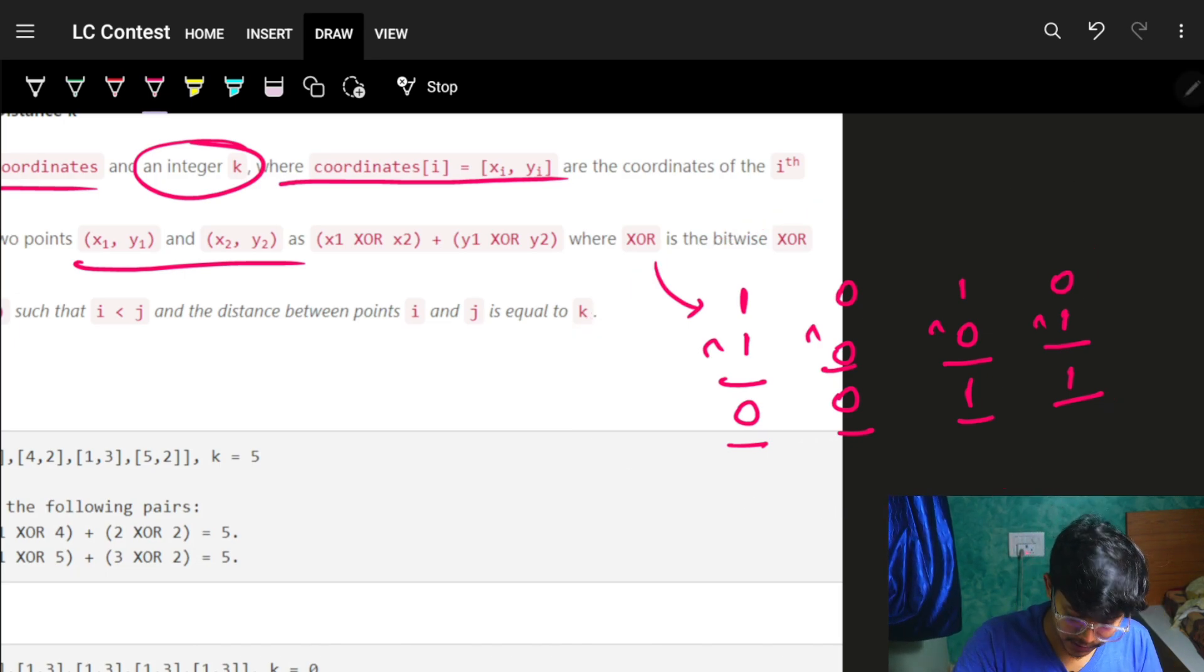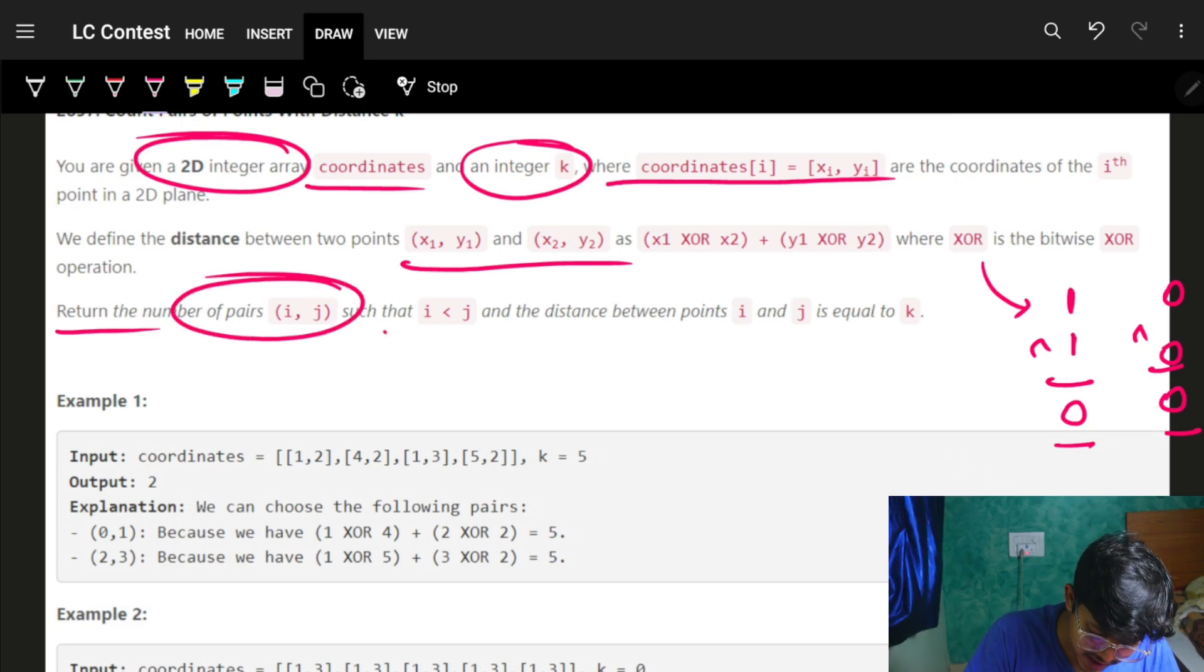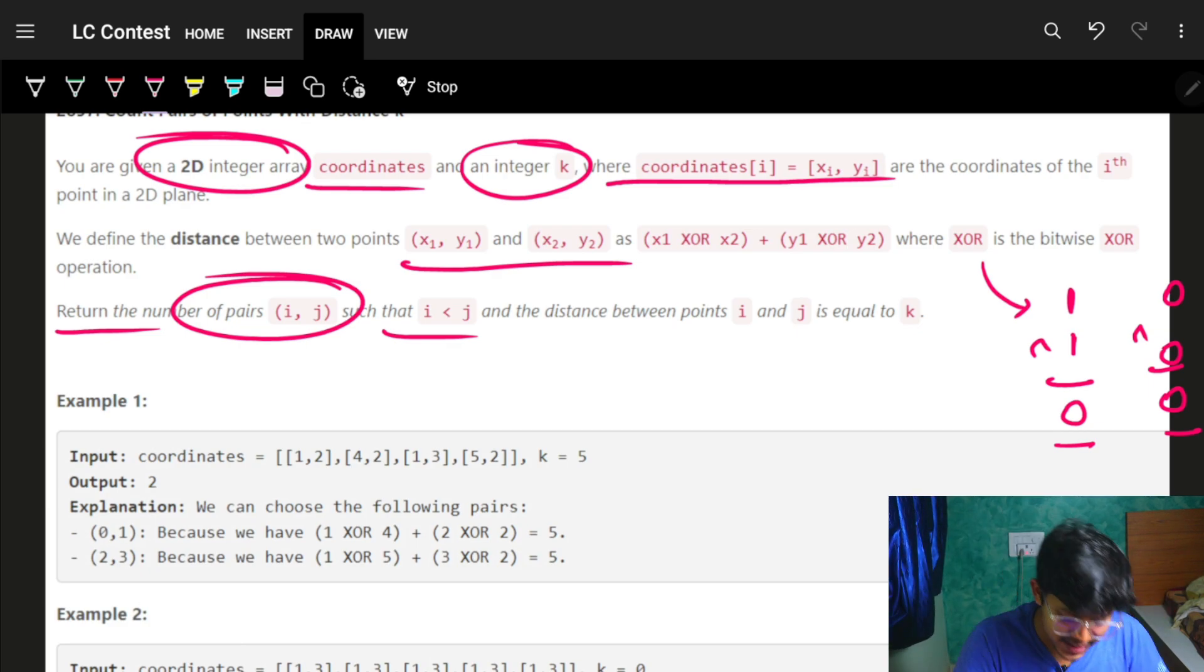I have to return the number of pairs (i, j) such that i is less than j, which means if I'm at j, I need to know all the previous i's, and the distance between those i and j pairs is exactly equal to k. That's the condition.